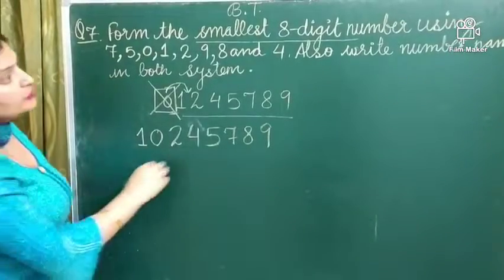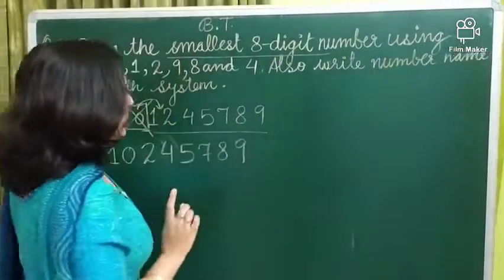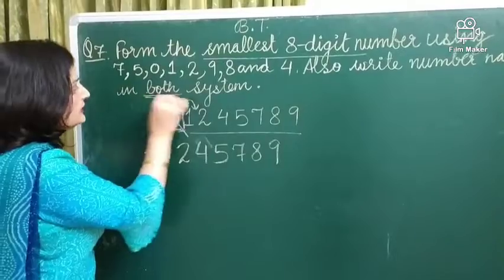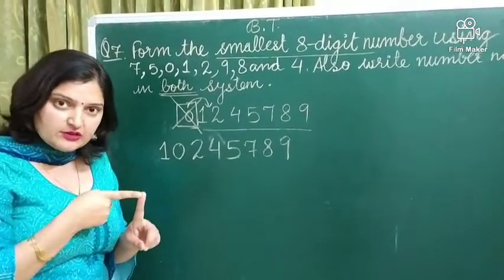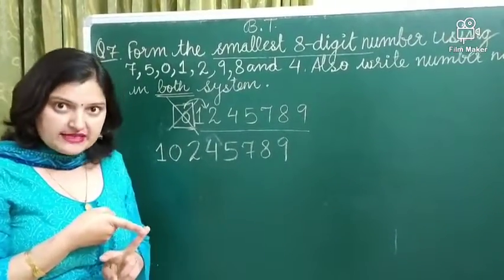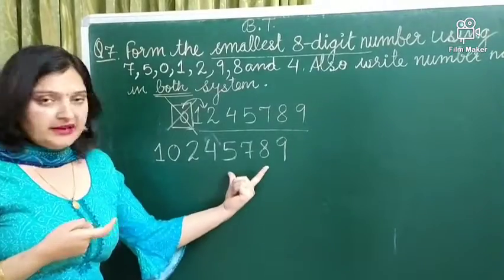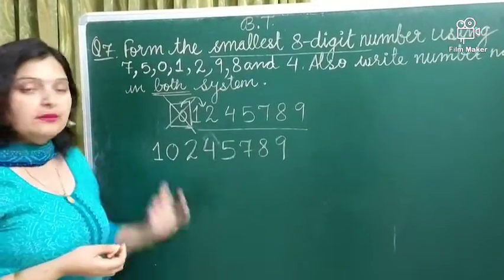Ab after it, what we have to do? Also write number names in both systems. Both, maktla hum hai kitne systems pade hai hai? 2. Indian place value system and international place value system. Ab aapko iska number name, dono system me likhina hai. To pehle hum indian me likhina hai.